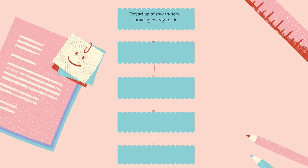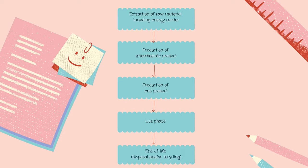The life cycle of a product consists of: first, extraction of raw materials including energy carriers; second, production of intermediate products; third, production of end products; next, the use phase; and lastly, end-of-life disposal or recycling.